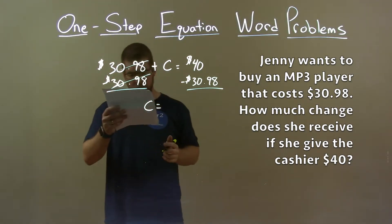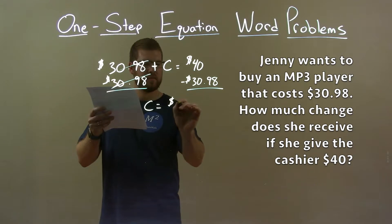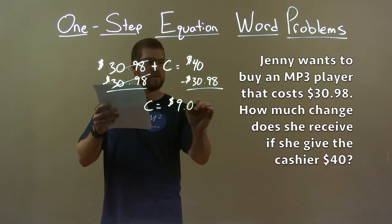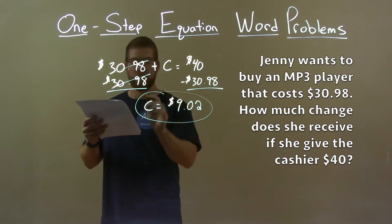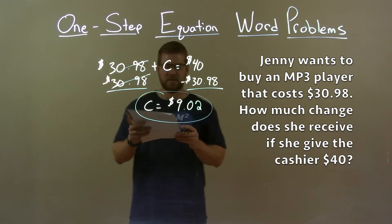$40 minus $30.98 is $9.02. That's our final answer, the amount of change that Jenny received.